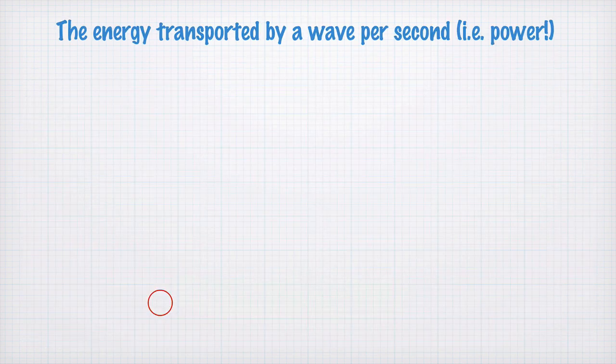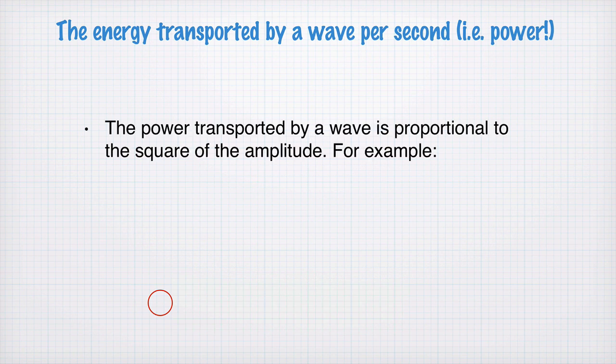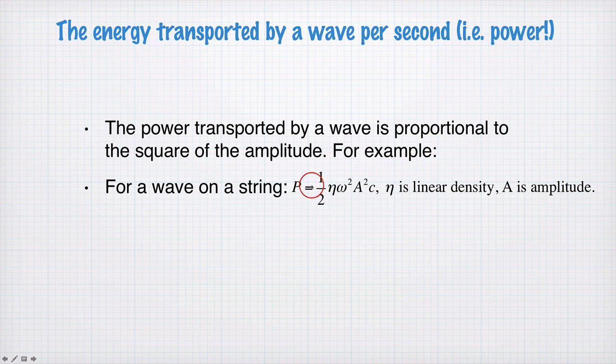The energy transported by wave per second, i.e. the power, is proportional to the square of the amplitude. For example, on a string, the power transported is a half times the linear density times the square of the angular frequency, where A is the amplitude and c is the speed. So it's proportional to the square of this amplitude here.